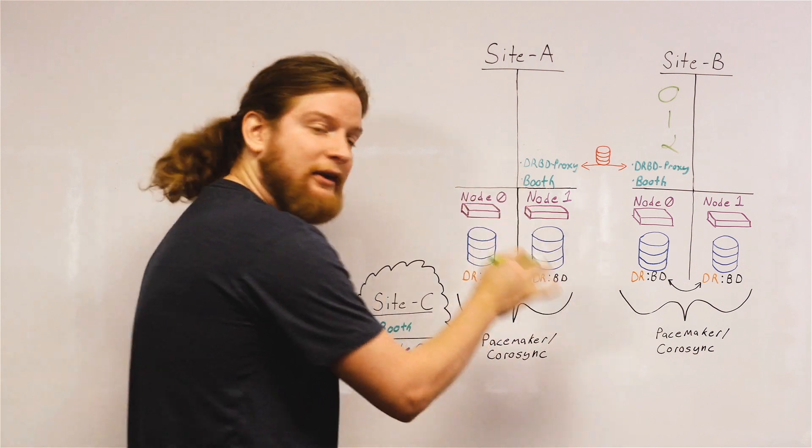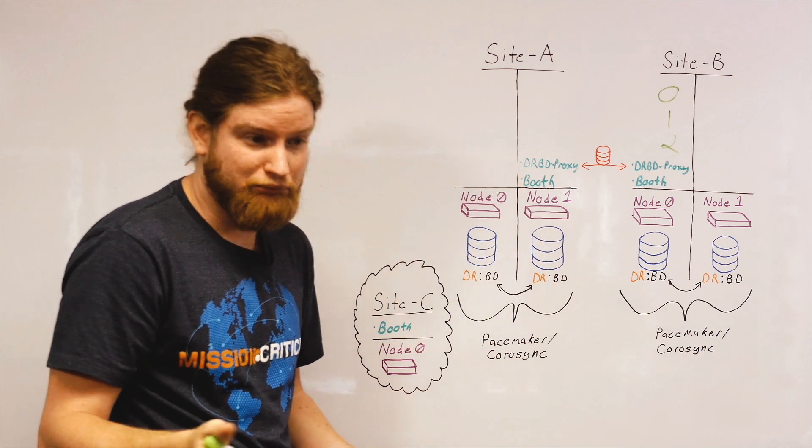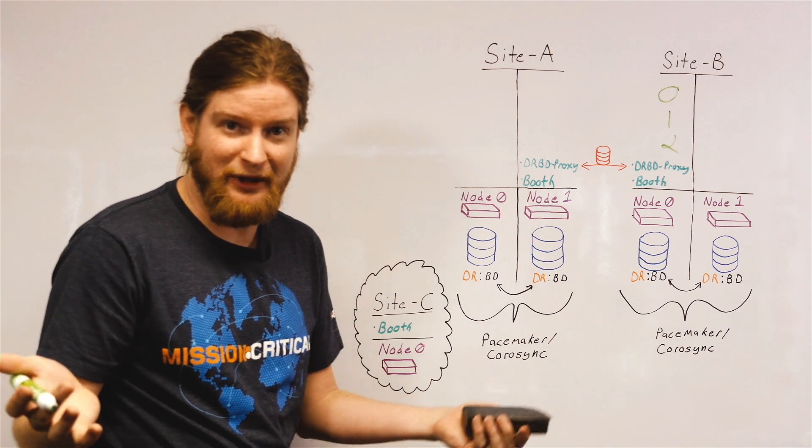It can communicate with Pacemaker clusters and allow them to have a cluster property, or attribute in this case, that allows them to say yes, we have what's called a ticket. And that's what Booth uses. Booth and tickets.